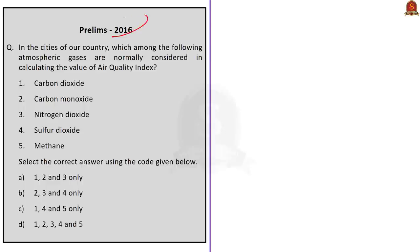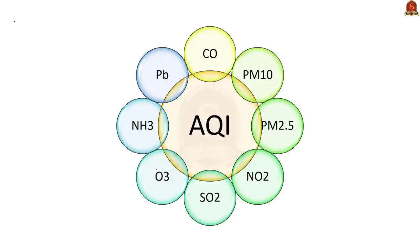Now let us solve some past prelims questions. This question was asked in 2016: In the cities of our country, which among the following atmospheric gases are normally considered in calculating the value of the Air Quality Index? Options include carbon dioxide, carbon monoxide, nitrogen dioxide, sulfur dioxide, and methane. The correct answer is option B — two, three, and four only. Air Quality Index measures air quality by measuring eight pollutants.